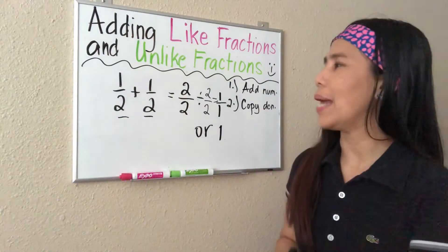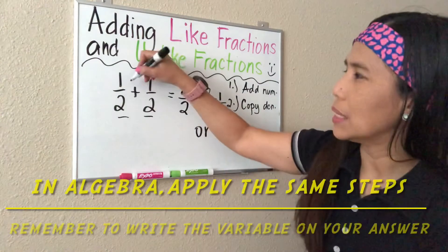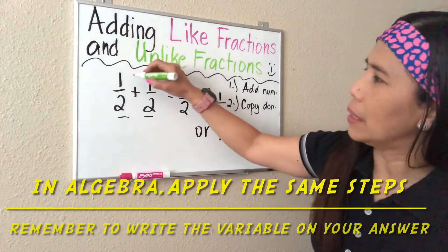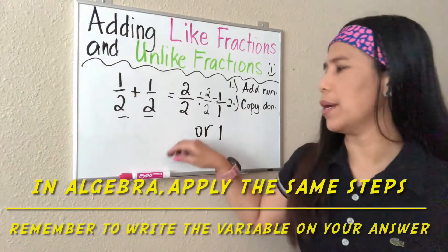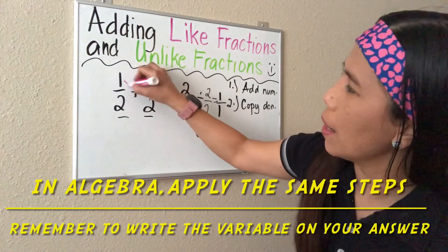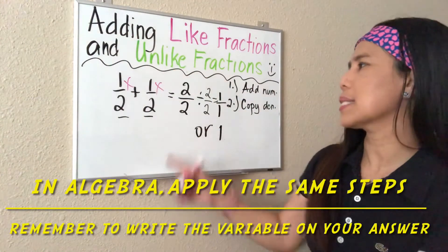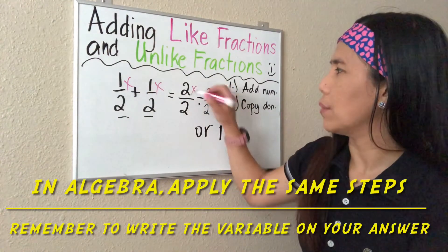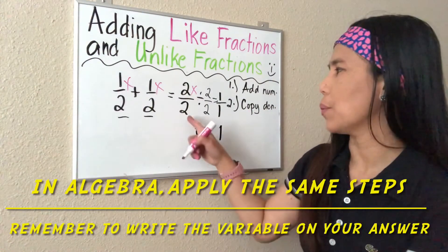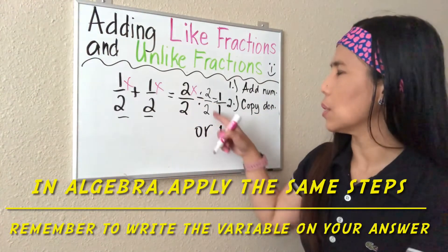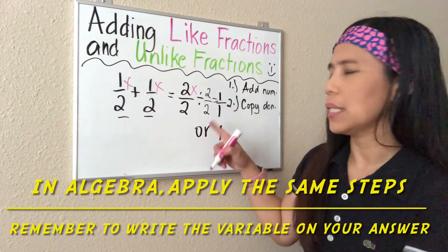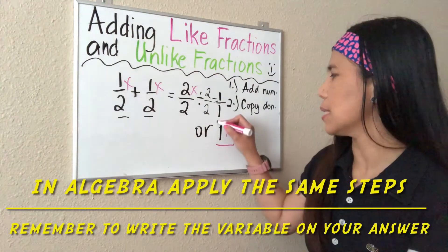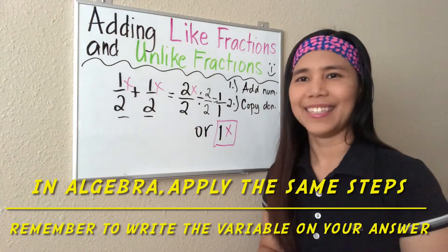Easy, right? In algebra, we just have a variable — we can use x as your variable. So, one-x plus one-x: we just add the numerators and that gives us two-x, then we copy the denominator. We reduce by dividing both numerator and denominator by the same number, and that gives us one-x. That is the final answer when dealing with algebra.